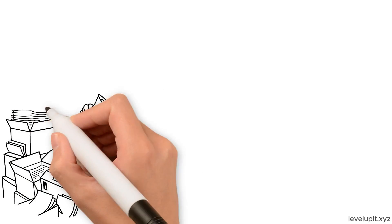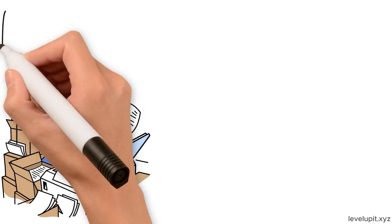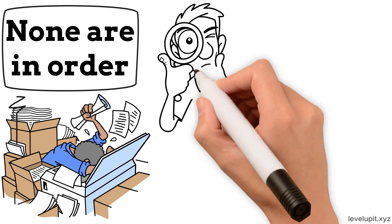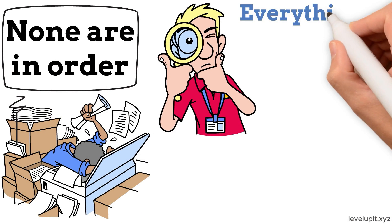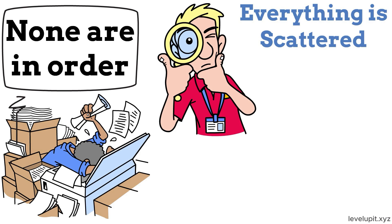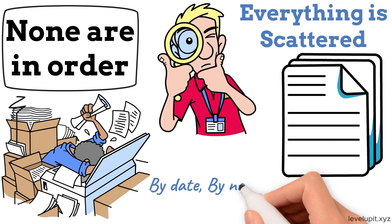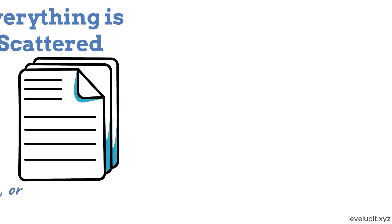Imagine a messy desk covered in papers. Some are important, some are not, and none are in order. Finding one document takes longer than it should because everything is scattered. Now imagine the same papers neatly sorted by date, by name, or by priority. Finding anything becomes quick and calm.